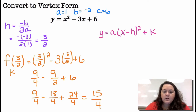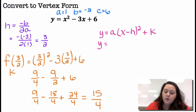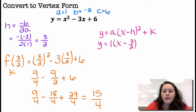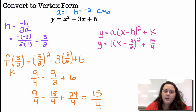Now I'm going to plug it into vertex form: Y equals A times X minus H squared plus K. A was 1 — you can put the 1 or you don't have to. Then X minus 3 halves, quantity squared, plus K which is 15 fourths. You can write it with or without the 1.